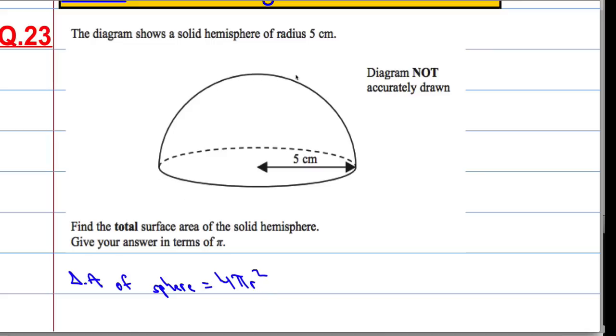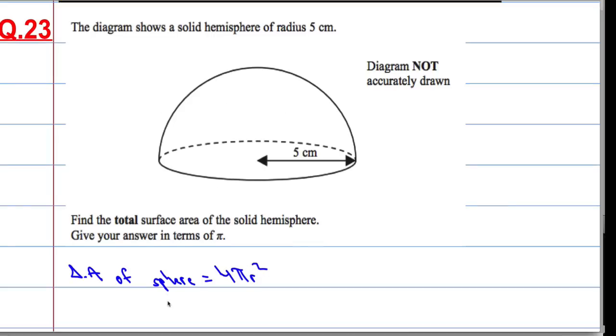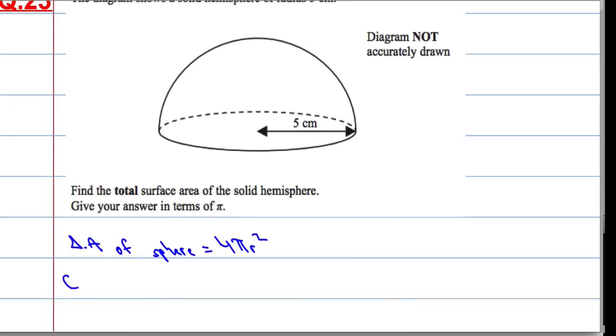So, that means for this, for just the curved bit, not the flat bit at the bottom, because the flat bit at the bottom is a circle, the curved surface area of a hemisphere will be half of the surface area of a sphere, so it would be 2 pi r squared.